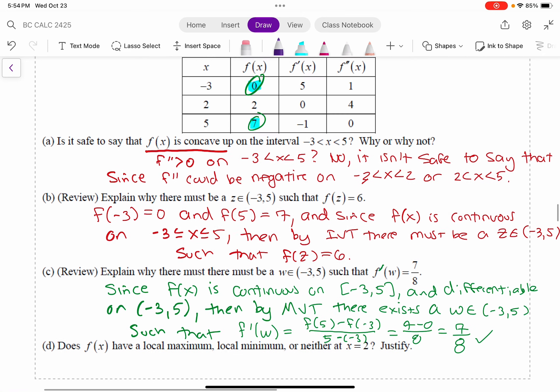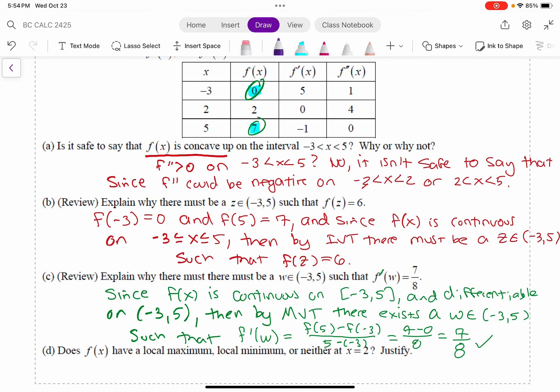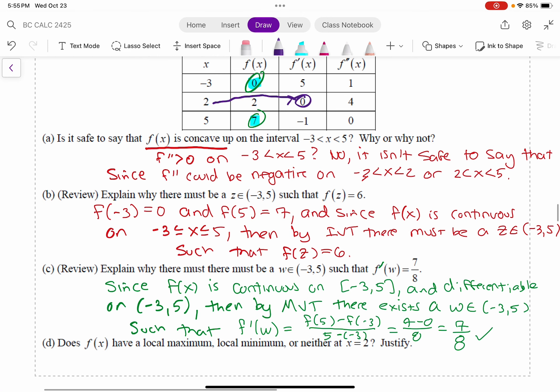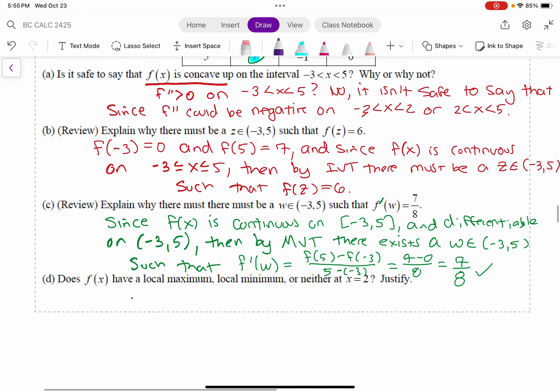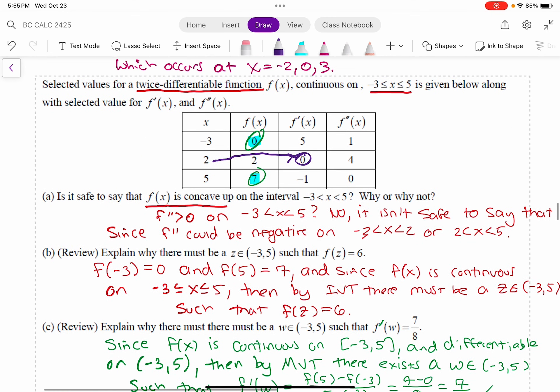So what does the second derivative test say? Well, first we need a critical point. So at x equals 2, right, let's go examine the first derivative. Aha! We have a critical point because the derivative is 0. So I'm going to say, since f prime of 2 is equal to 0, that means we have a critical point. Now we need to examine the sign of the second derivative,